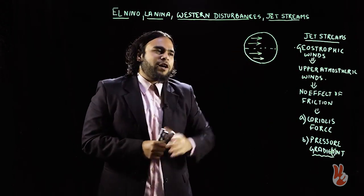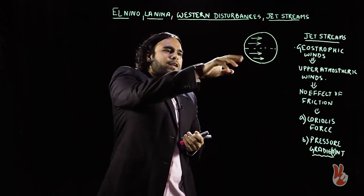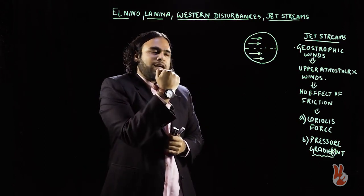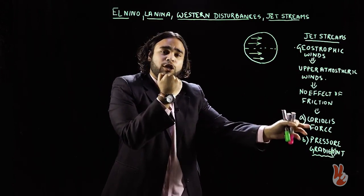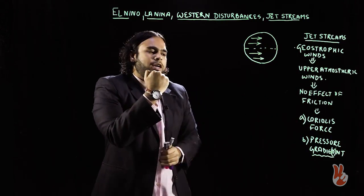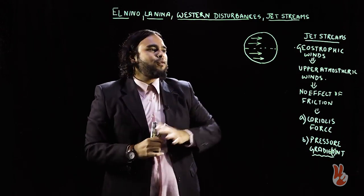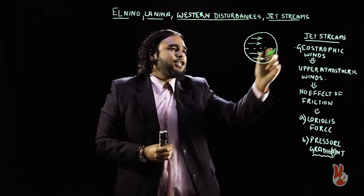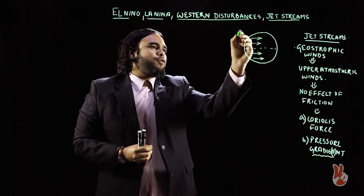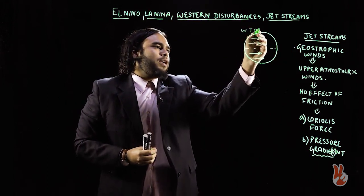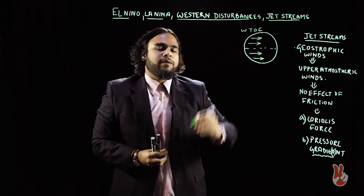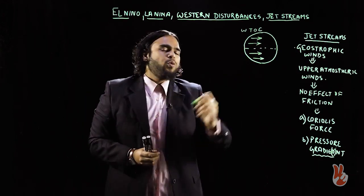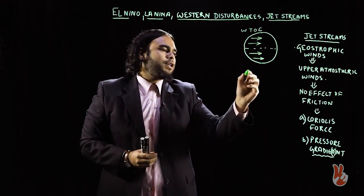In the southern hemisphere, the wind moves southward and because of Coriolis force it deflects to the left. As a result, in both hemispheres the direction of the jet stream is from west to east. Now we have to look into certain facts regarding jet streams.